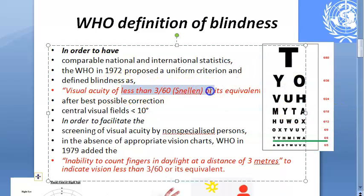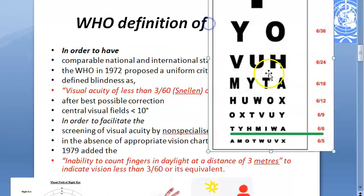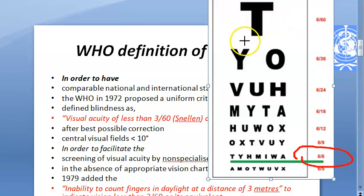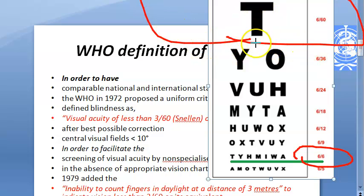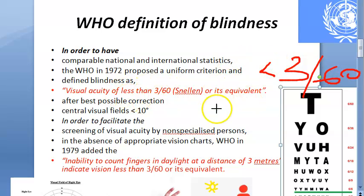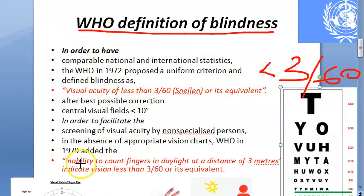WHO does have a definition for blindness: if visual acuity is less than 3 by 60 on Snellen's chart, it is called blindness. Normal vision is 6 by 6, or 20 by 20. So if a person cannot see even the 6 by 60 letter — even worse than that — and this is even with correction, that will be classified as blindness. Less than 3 by 60 Snellen's or its equivalent visual acuity is the WHO definition of blindness.